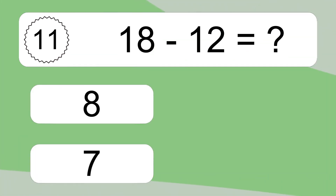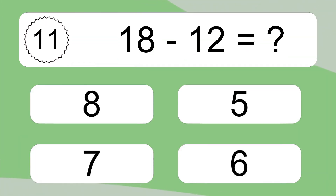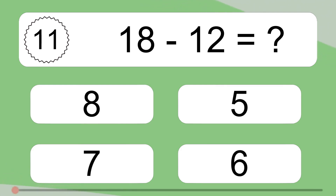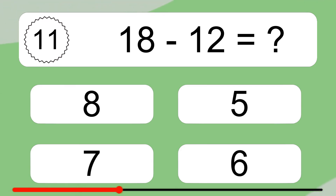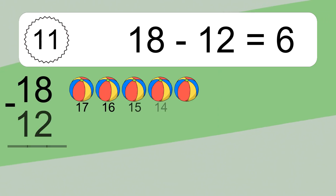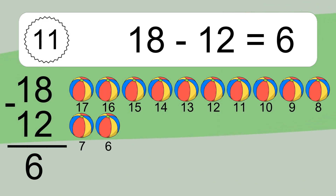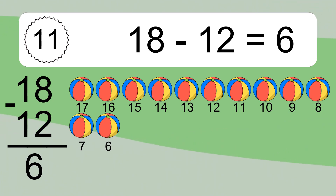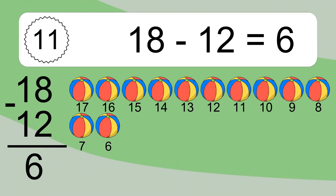18 minus 12 equals what? 18 minus 12 equals 6. Let's count it: 18, 17, 16, 15, 14, 13, 12, 11, 10, 9, 8, 7.